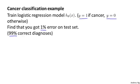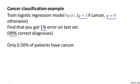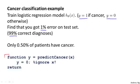Seems like a really impressive result — correct 99% of the time. But now let's say we find out that only 0.5% of patients in our training and test sets actually have cancer. In this case, the 1% error no longer looks so impressive. Here's a piece of non-learning code that takes the input features x, ignores them, just says y equals 0, and always predicts nobody has cancer. This algorithm would actually get 0.5% error.